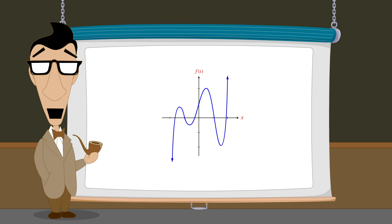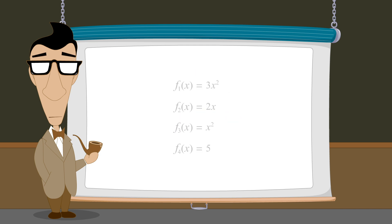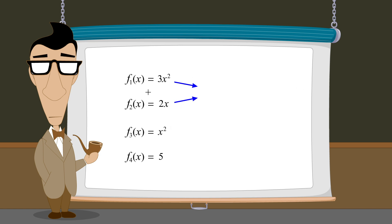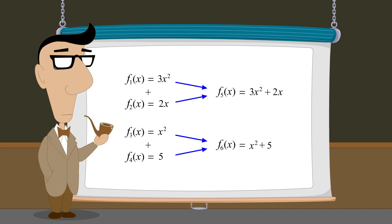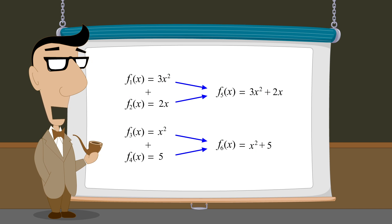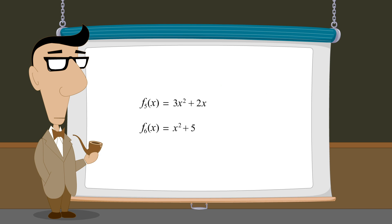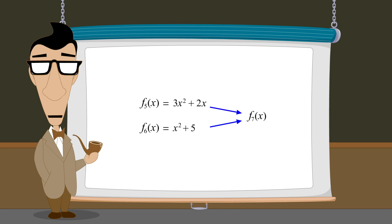Just as monomial functions can be added to produce polynomial functions with more than one term, those polynomials can be added or subtracted to produce new polynomials with different characteristics. So let's see how the process of adding or subtracting polynomial functions works.